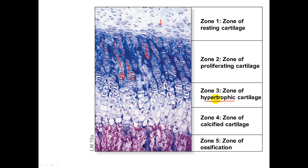In Zone 3, the zone of hypertrophic cartilage, the chondrocytes cease to divide and begin to grow in size — which is hypertrophy — and the walls on the sides of the lacuna begin to get thinner.